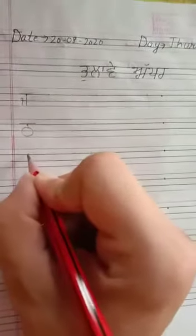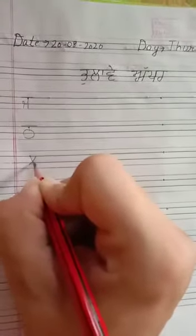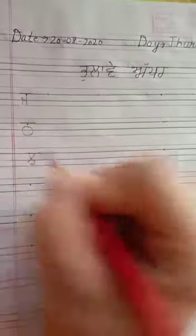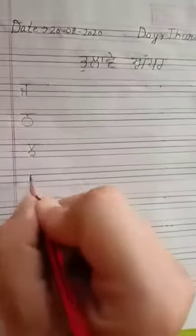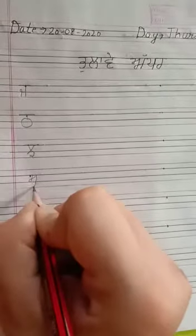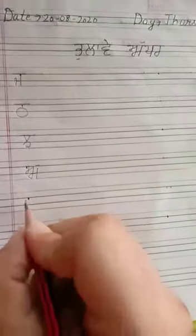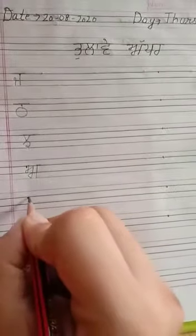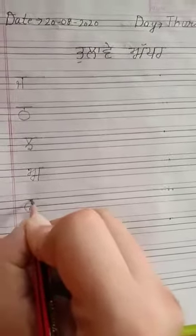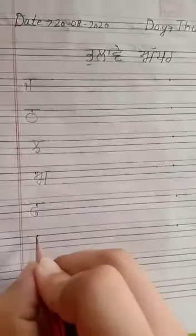Next, write Chajja. Next, write Ada. Next, write Fuffa. Next, Haaha.